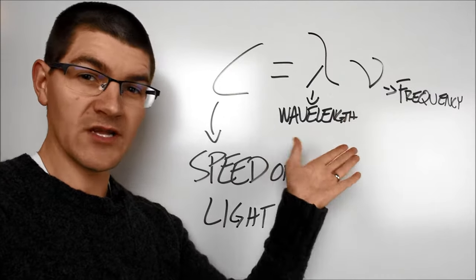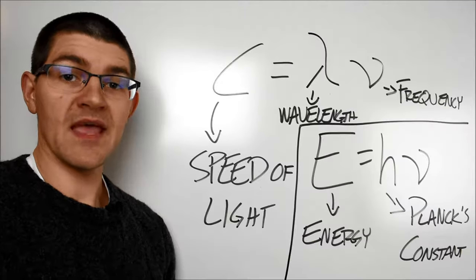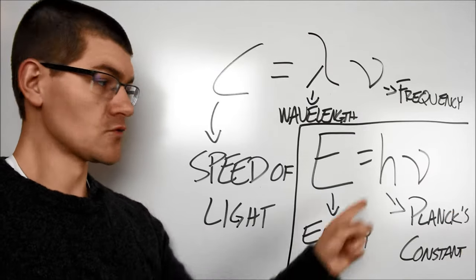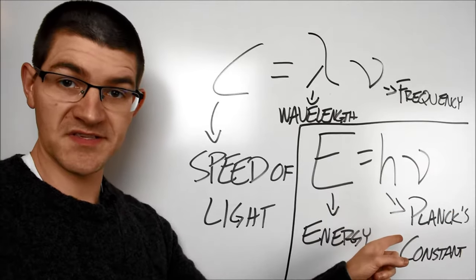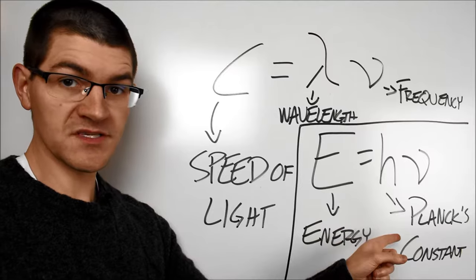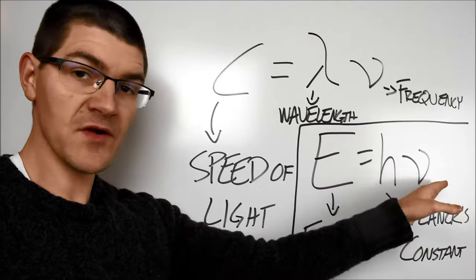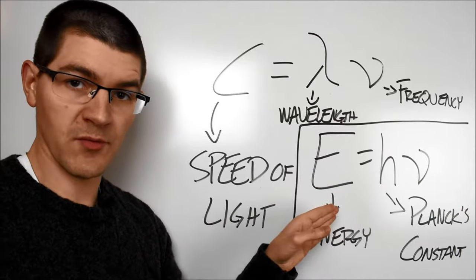Now let's take this equation and move it to a second one and put all this together. And here's our second equation, E equals H nu. E here is energy in joules. H is Planck's constant, 6.626 times 10 to the negative 34 joule seconds, for those of you playing at home. And nu is still our frequency. With this equation, we can see that the frequency and energy are directly proportional.